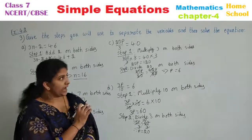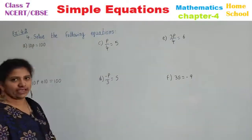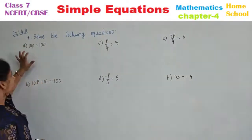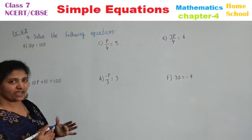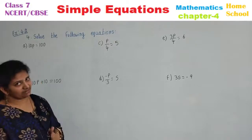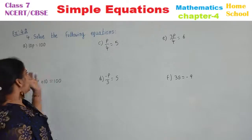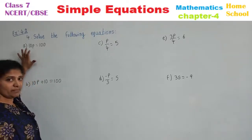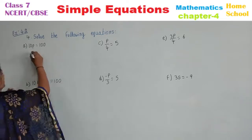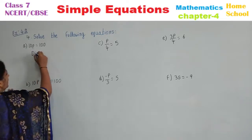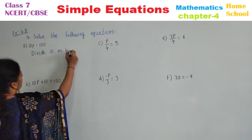Observe carefully and do it two times in your book now. Fourth main: Solve the following equations. Option A: 10P is equal to 100. Now all types of problems we are going to do in this main. Observe — other than variable, where is the number? The number is multiplied. So what we need to do? Divide with that number in order to get the variable value. Divide 10 on both sides.